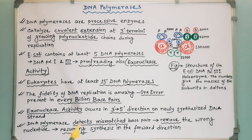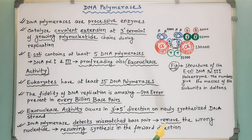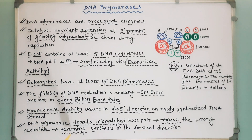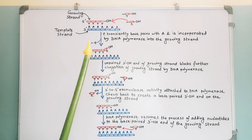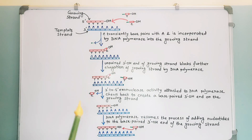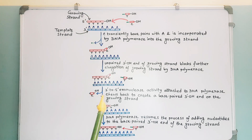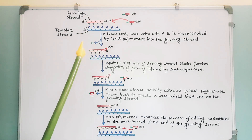When an incorrect nucleotide is inserted, the polymerase often detects the mismatched base pair and corrects the error by backspacing to remove the wrong nucleotide and then resuming synthesis in the forward direction. Here I have drawn diagrams showing the exonuclease proofreading activity of DNA polymerase.